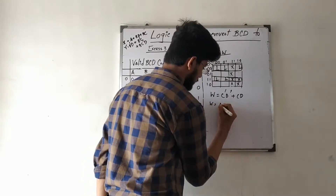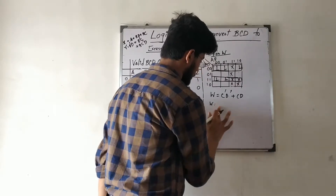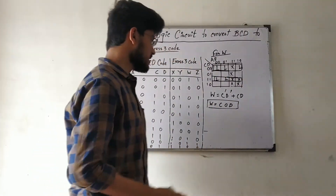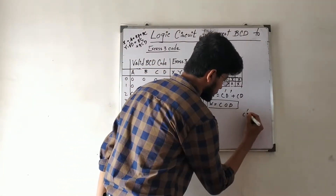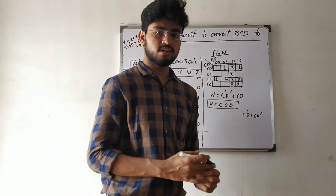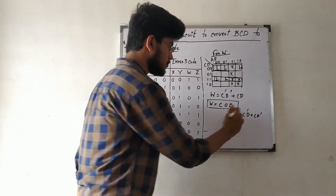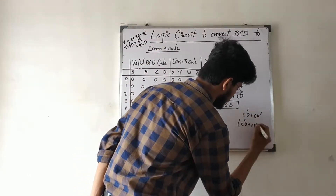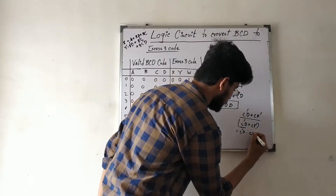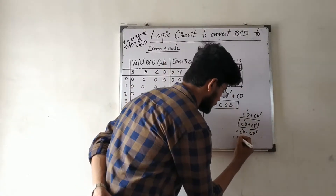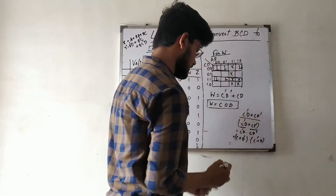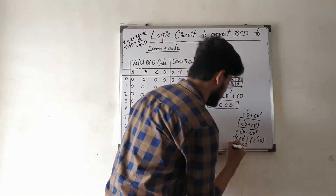For W, the expression simplifies to C̄D̄ + CD. We recognize this as an XNOR gate, because C̄D + CD̄ is the XOR function, and taking its complement gives C̄D̄ + CD, which is XNOR. So W = C XNOR D.